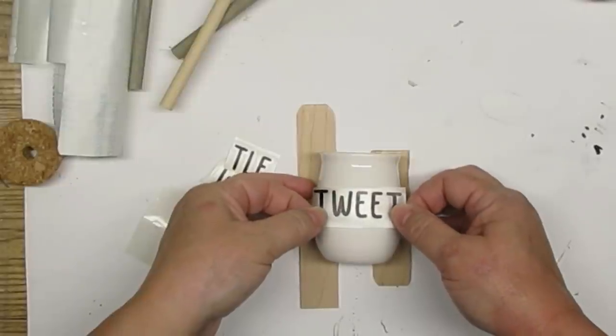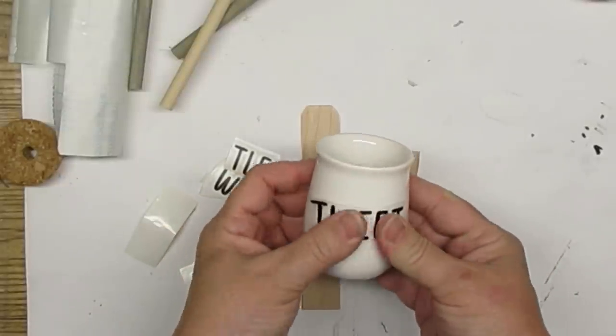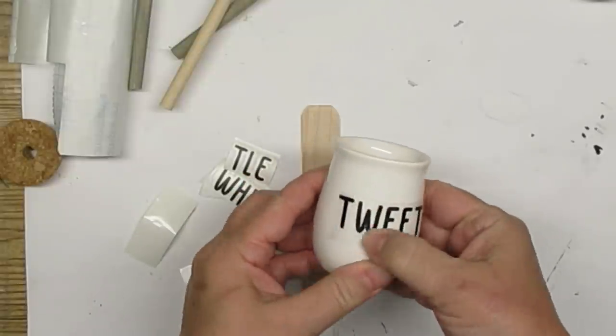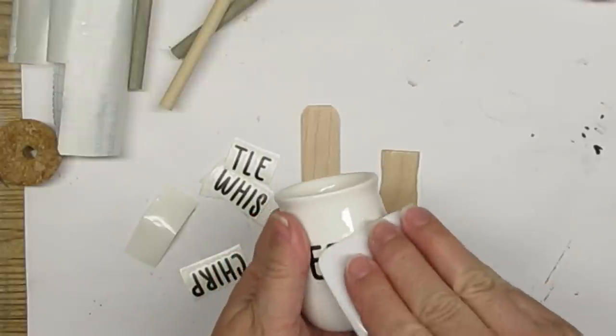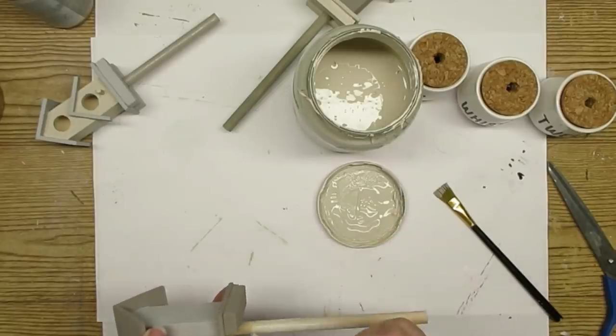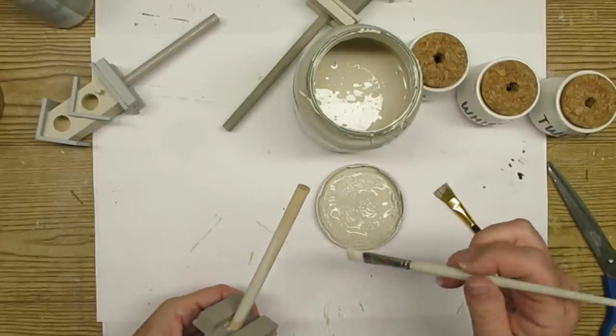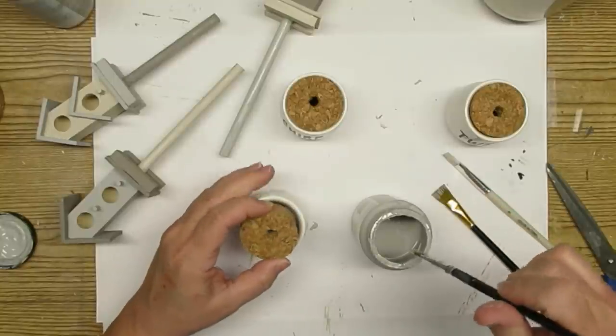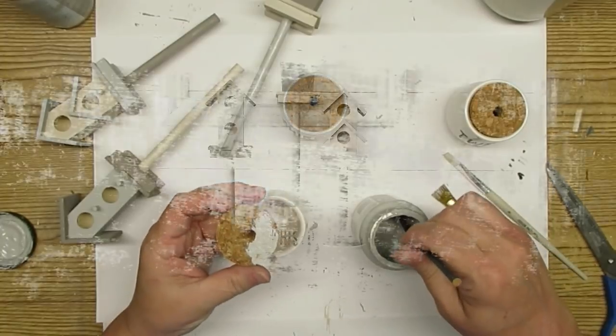Using my Cricut again, I just cut out the words tweet, chirp, and whistle, and I'm going to apply those to the little white containers to make a sweet little birdhouse trio. I painted the dowels and the tops of the corks in coordinating colors and then assembled everything together. I really love these. I think they're probably one of my most favorite projects that I've ever come up with.